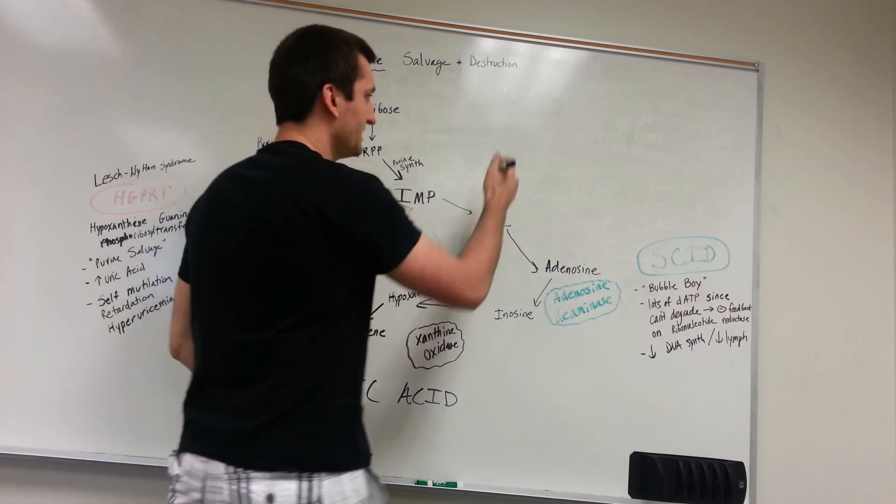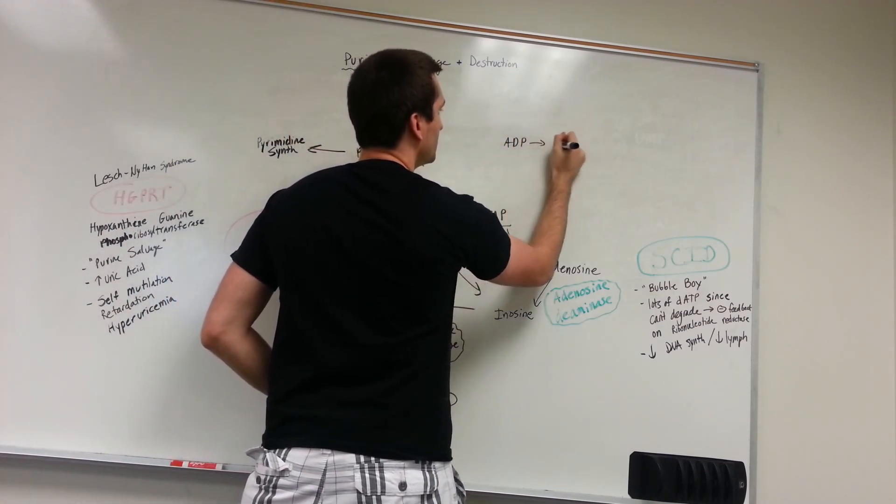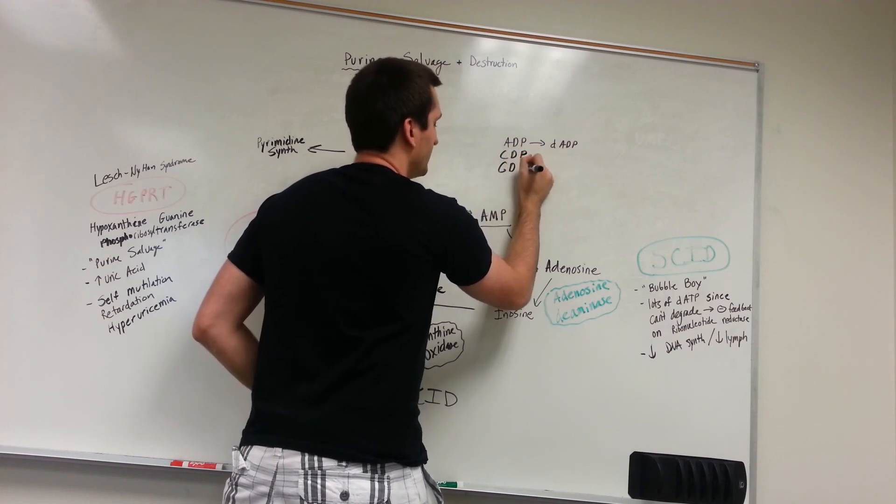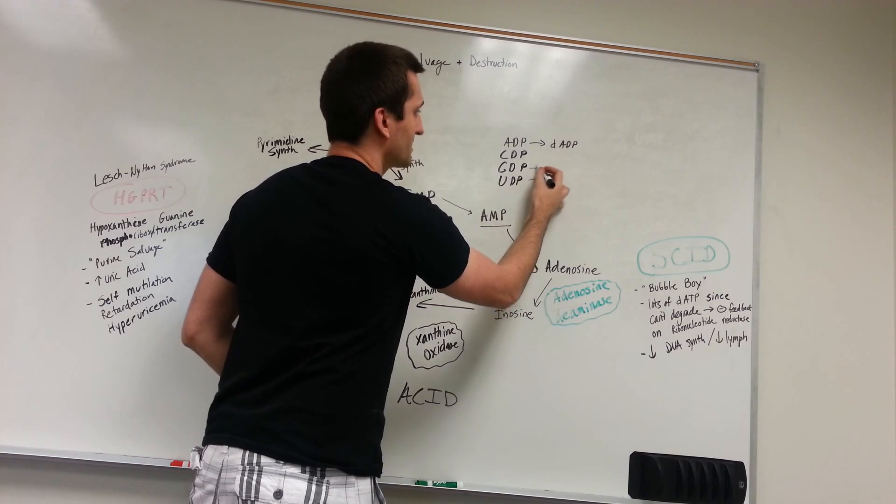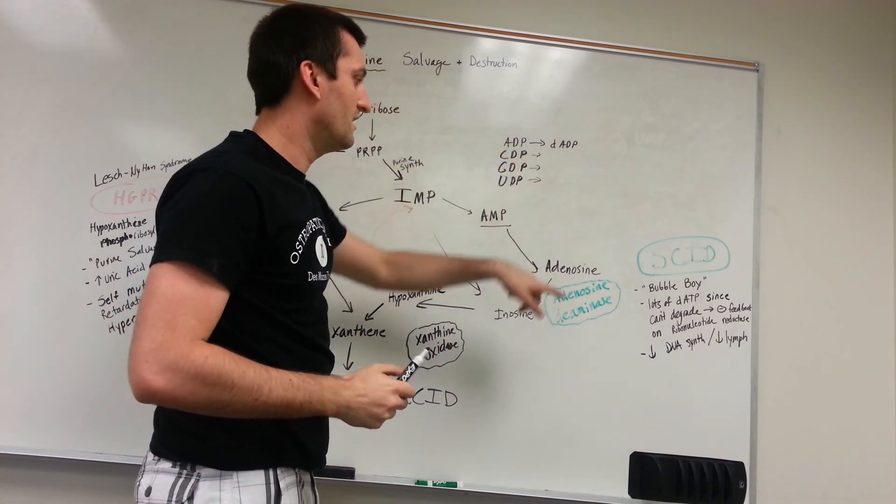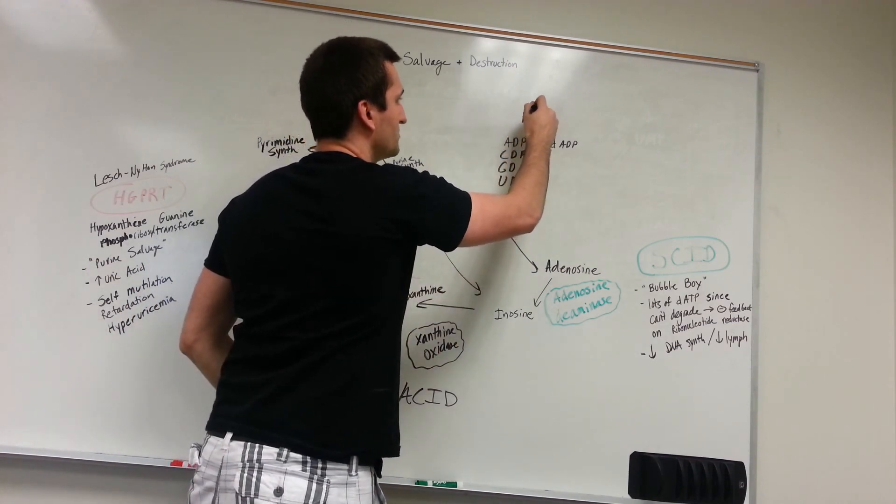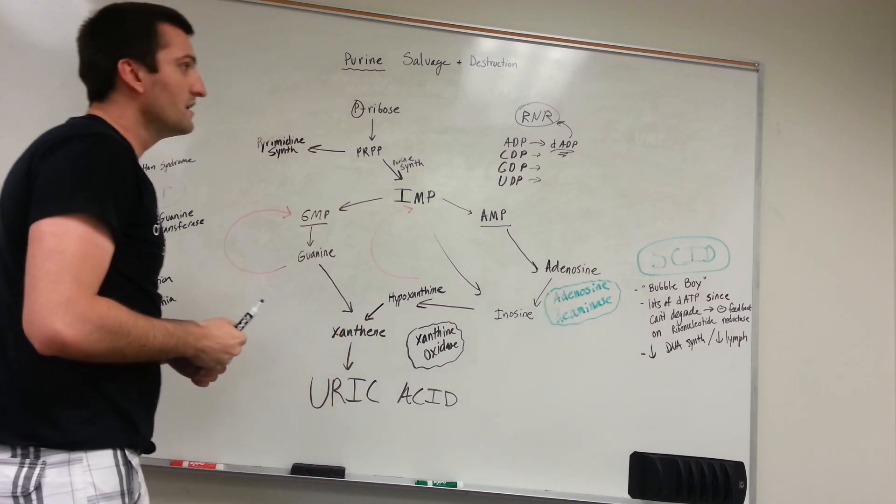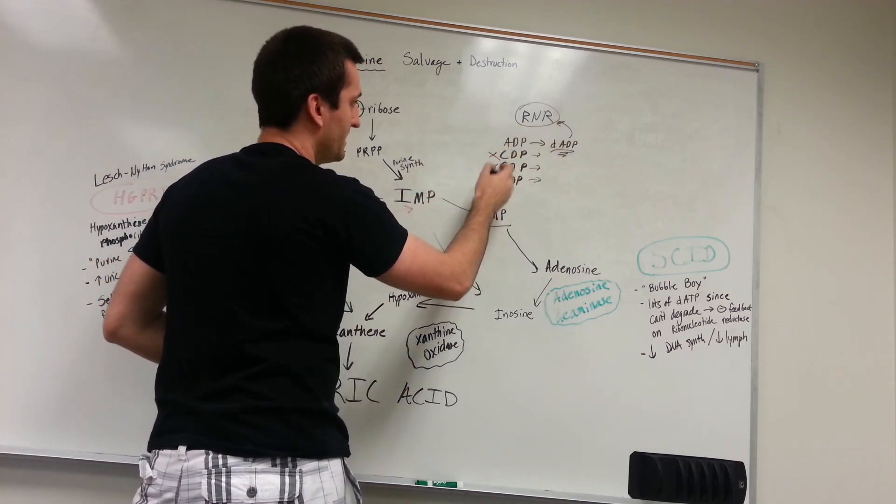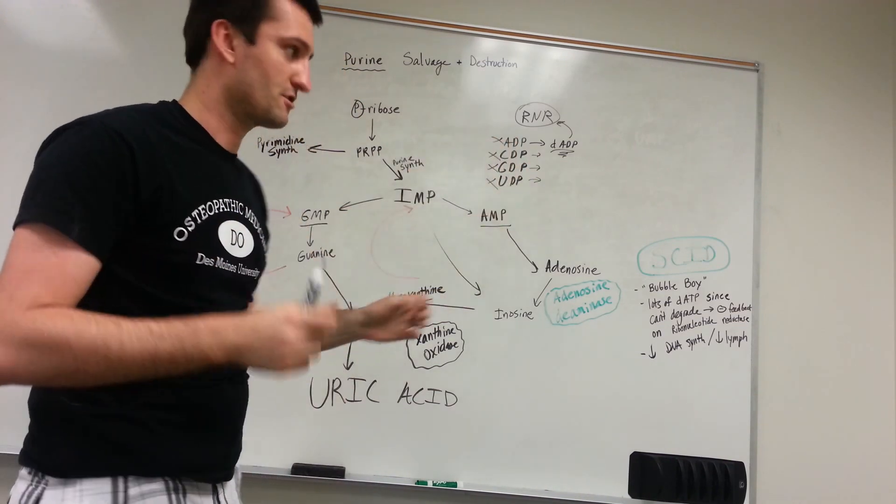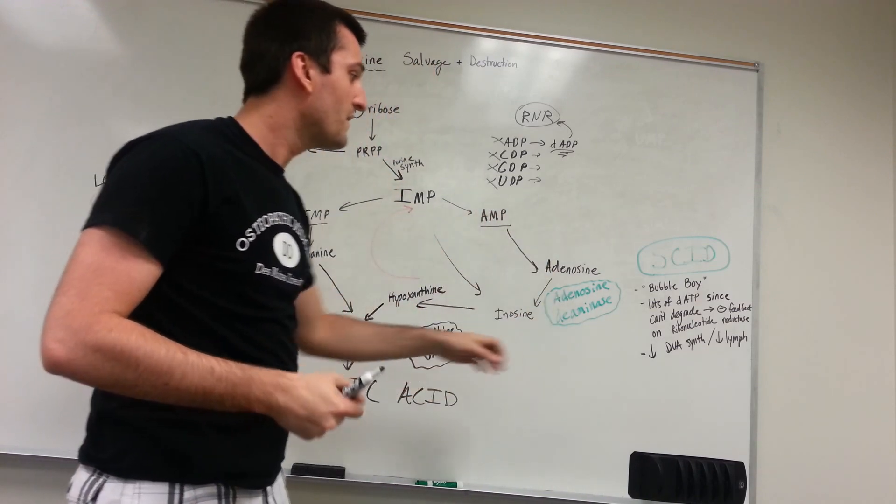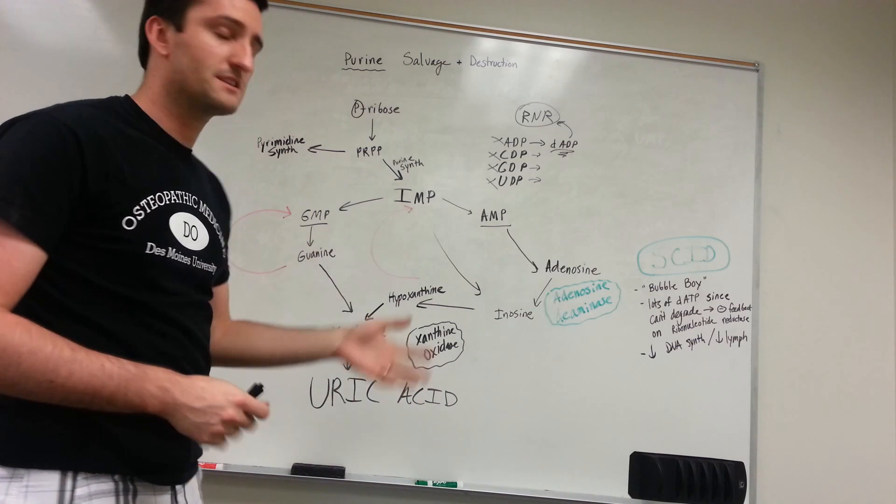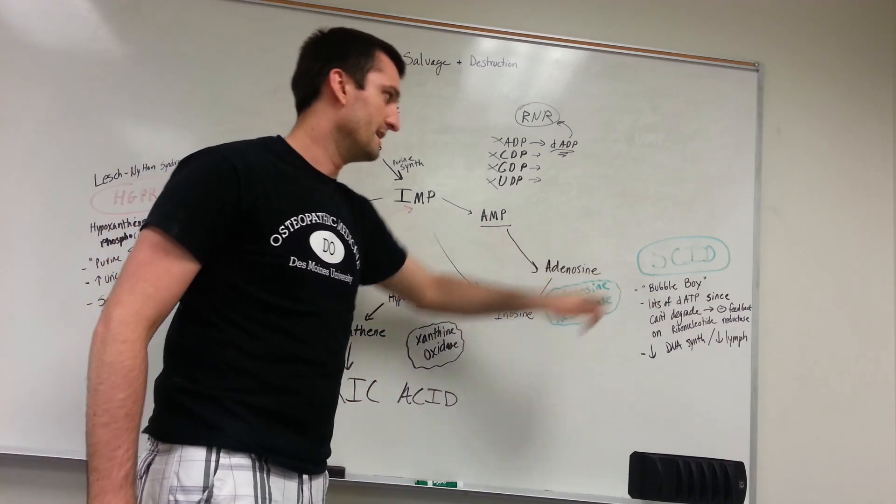The ribonucleotide reductase converts ADP into dADP, but it also converts CDP, GDP, and UDP into their deoxy forms as well. So we have a buildup here of the dATP. We have a buildup of this, which feedback to negative inhibition there. However, that feedback will also cancel that and cancel that, so it's not making the DNA precursors. So we're not able to replicate our DNA, so we have decreased DNA synthesis and thus decreased lymphocytes, and our immune system eventually shuts down because we're not able to synthesize more DNA. That's where you get severe combined immunodeficiency.